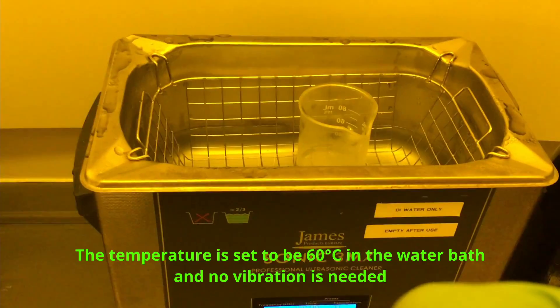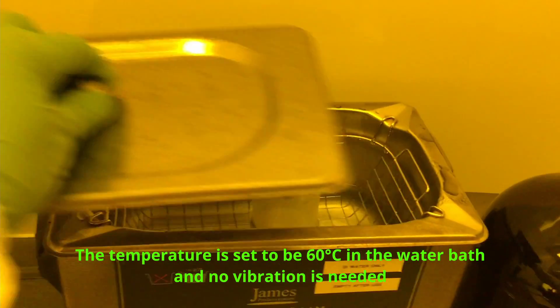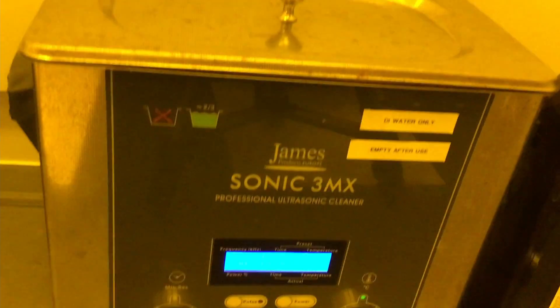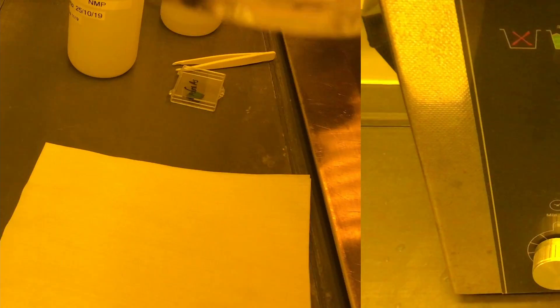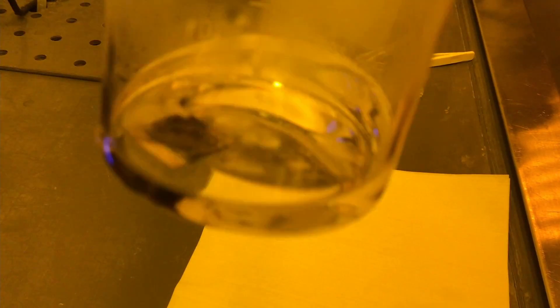Put the sample into a beaker and place the beaker in hot water at 60 degrees Celsius. After 5 minutes, take the beaker out. It can be seen that some gold has been peeled off.